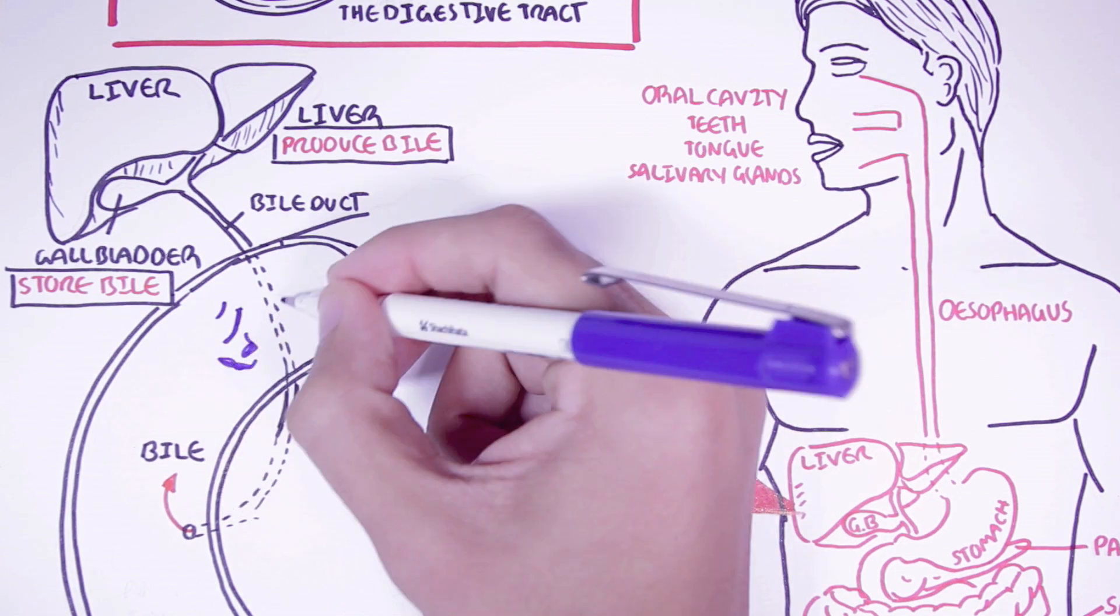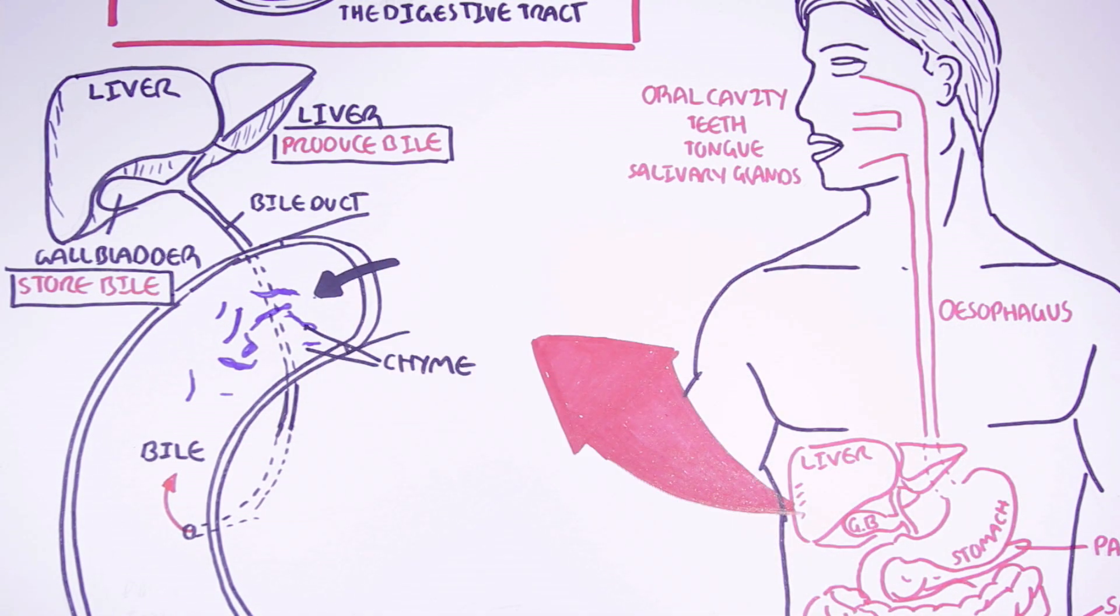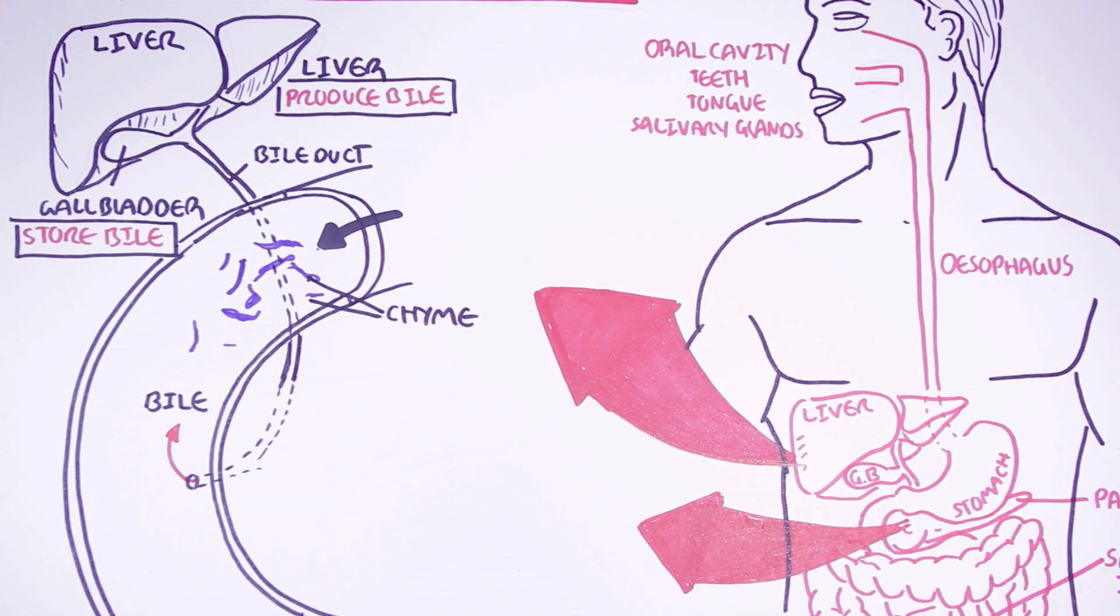So to see where the food is, the chyme. The chyme is actually coming from the stomach and is here within the small intestine now. So the other important accessory organ that has to be mentioned here is the pancreas.